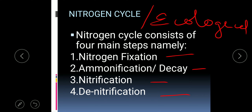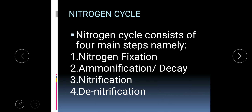The nitrogen cycle is a biogeochemical cycle through which the percentage of nitrogen remains constant in the air and in the soil. It is called a biogeochemical cycle because microorganisms are the biological agents, geology refers to the different layers of our atmosphere, land, and water, and chemical refers to the regulation of the nitrogen element in different parts of the environment. The four steps are: nitrogen fixation, ammonification, nitrification, and denitrification.